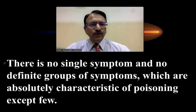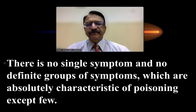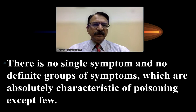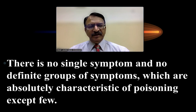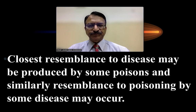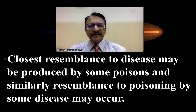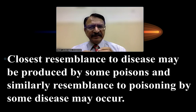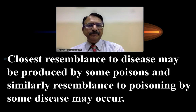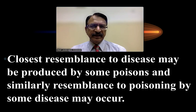There is no single symptom and no definite group of symptoms absolutely characteristic of poisoning, except a few. We cannot confirm a typical textbook picture of symptoms in the patient. The closest resemblance to disease may be produced by some poisons — that is, symptoms of poisoning may closely resemble symptoms of a disease. Similarly, symptoms of some disease may appear like symptoms of poisoning, and vice versa.